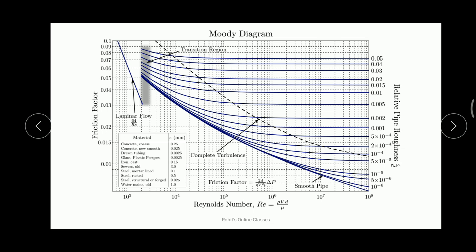The multiple curves on the diagram represent different values of relative pipe roughness. The extreme lower line corresponds to a very smooth pipe. Using this diagram, within a glance you can find the Reynolds number, the friction factor, and the relative roughness of the pipe. That is why Moody's diagram is so beneficial.